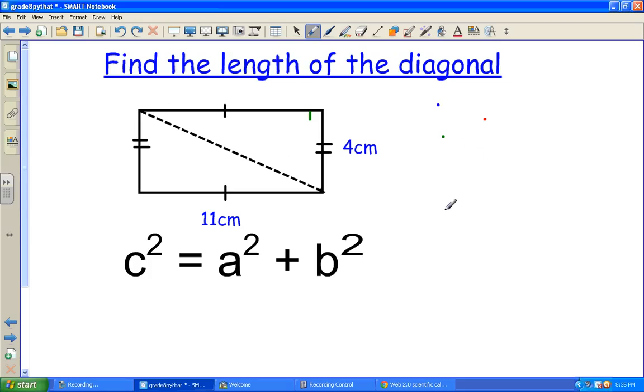Well, if you look at a rectangle, we know that opposite sides will be equal. So if this is 4, this must be 4 as well. And if this is 11, this must be 11 as well.